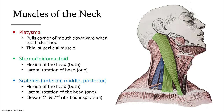Scalenes are deeper muscles that attach to the first two ribs. They can flex the head to the side or be used for inspiration to help elevate the upper two ribs and aid in lung inflation.